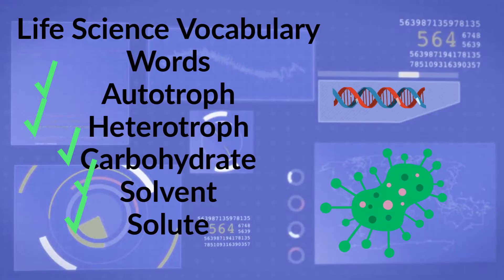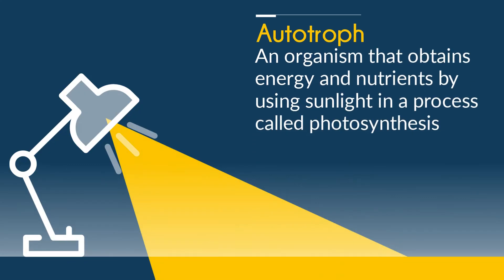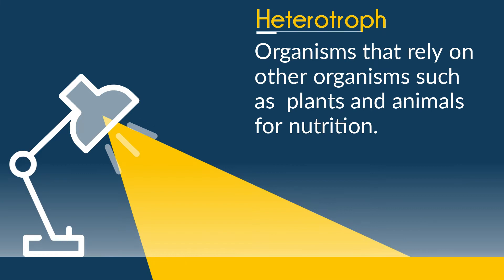Up first is an autotroph. This is an organism that obtains energy and nutrients by using sunlight in a process called photosynthesis. Here are some examples of autotrophs — plants are autotrophs.